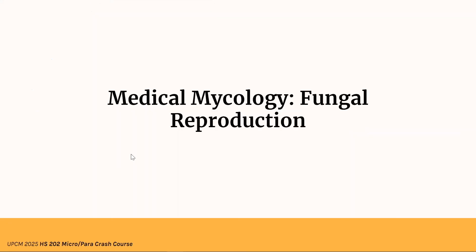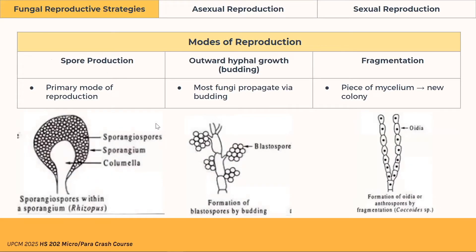Now let's talk about fungal reproduction. There are three basic modes of fungal reproduction. First is spore production — it's the primary mode of reproduction. You can also have budding or outward hyphal growth, which many fungi use to propagate. And there is fragmentation — a demonstration is if you scrape off mycelium from a petri dish and transfer it to a new fresh petri dish, the fungus will still grow from just a portion of the original colony. That's fragmentation.